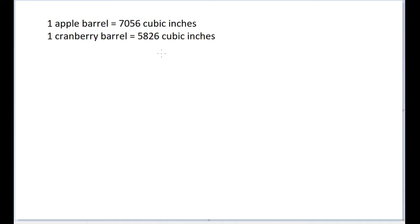So what this problem asks us is, if someone were to sell 20 cranberry barrels of goods to someone who mistakenly believes they are receiving apple barrels, what is the discrepancy in the shipment volume, in liters?